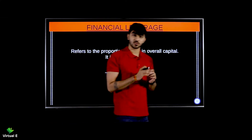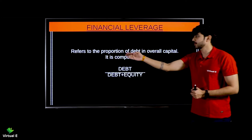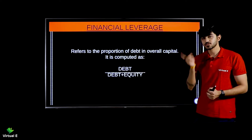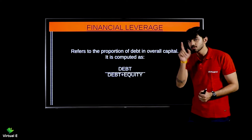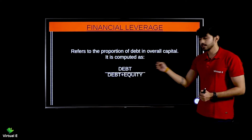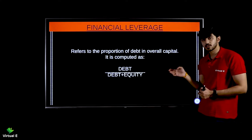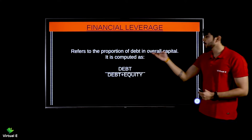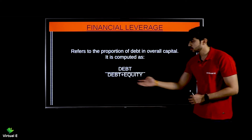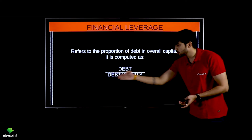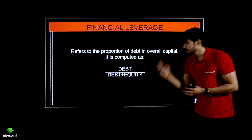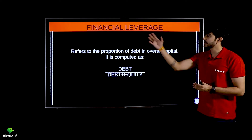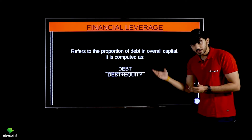Next point under capital structure: financial leverage. Financial leverage refers to the proportion of debt in overall capital - how much of the total capital is debt. For example, if total capital is 1000 crores and debt is 60 percent, that is 600 crores divided by 1000 crores - your financial leverage is 60 percent. Overall capital means debt plus equity combined, because both together make the company's total capital. So the formula for financial leverage is: Debt divided by (Debt + Equity).